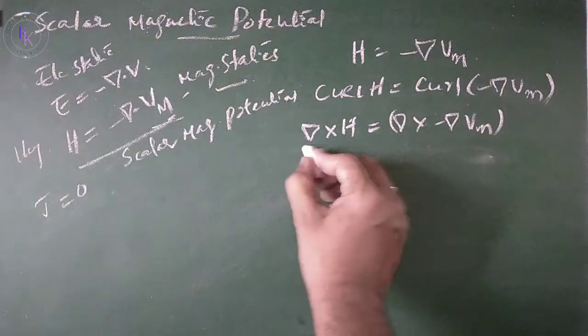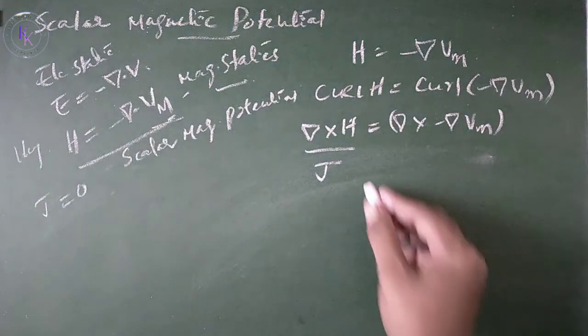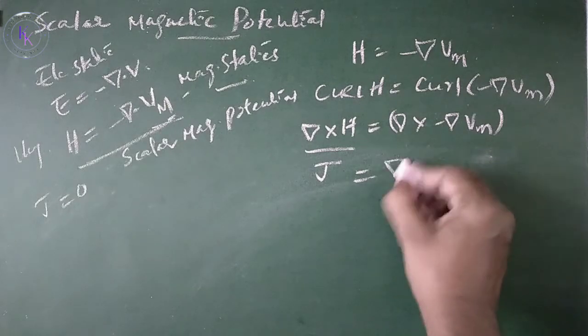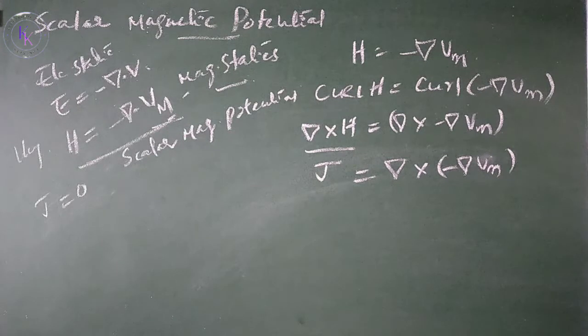But we know that del cross H equals J. This equation: current density equals del cross of minus del Vm. The curl of gradient of scalar is 0.